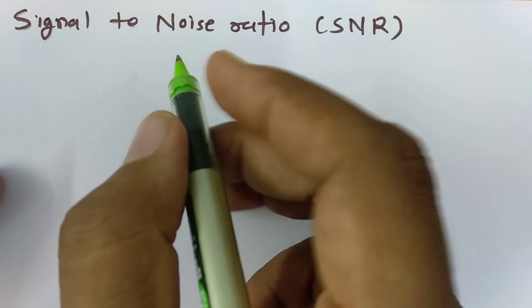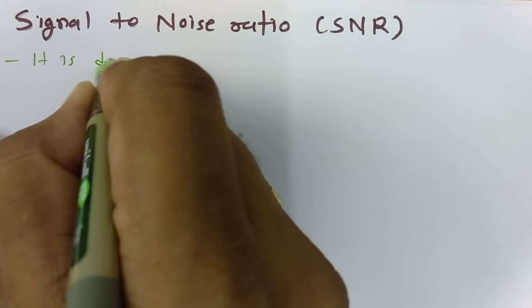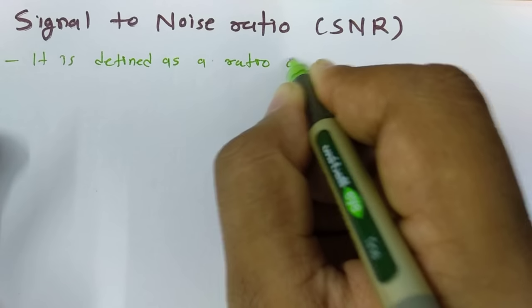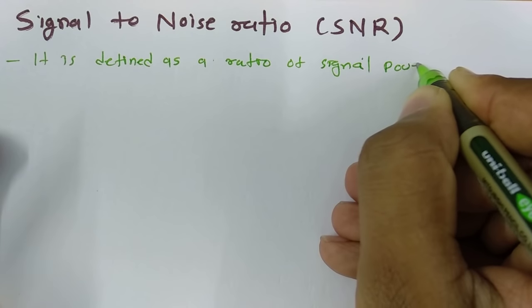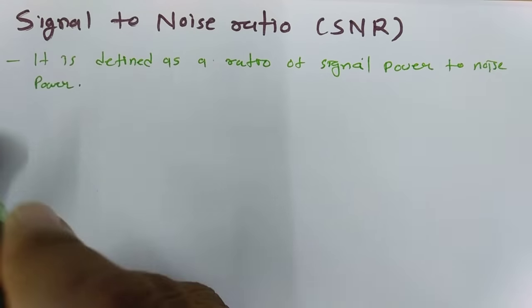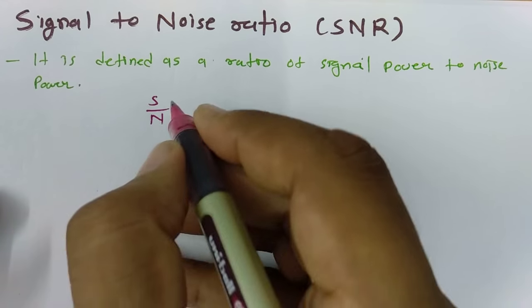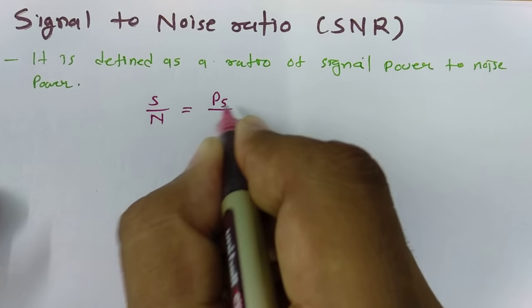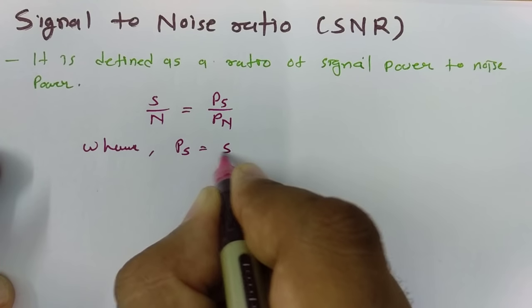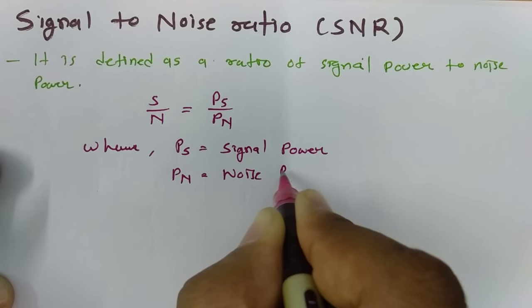When we talk about signal to noise ratio, it is the ratio of signal power to noise power. We calculate this as S by N, which equals signal power divided by noise power — where PS is signal power and PN is noise power.